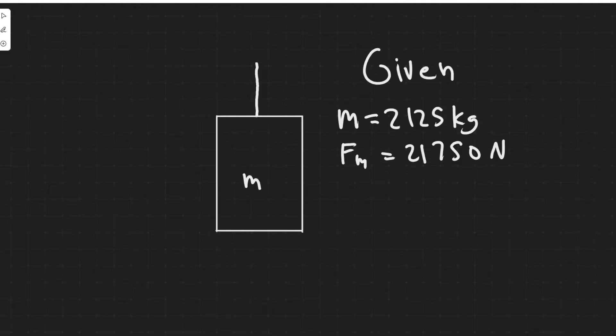Okay, so in this problem we're told the cable supporting a 2,125 kilogram elevator has a maximum strength of 21,750 newtons. What maximum upward acceleration can it give the elevator without breaking?